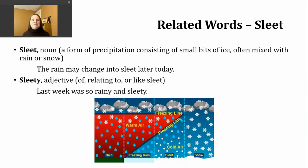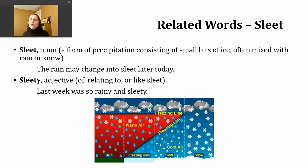The last word I'm going to leave you with today is the adjective 'sleety.' What that might mean is of or relating to sleet — it could also mean sleet-like if we're trying to describe something. Here's an example of this adjective in a sentence: 'Last week was so rainy and sleety.' This probably isn't an adjective you're going to hear a lot, but in case you would hear it or see it, hopefully you can connect it back to sleet.